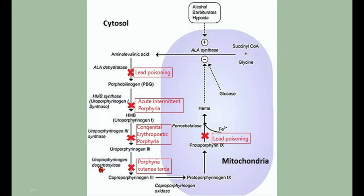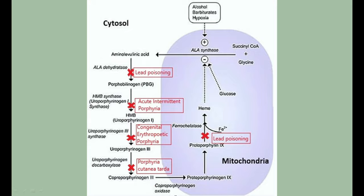The third type is porphyria cutanea tarda. Uroporphyrinogen 3 is converted by uroporphyrinogen decarboxylase into coproporphyrinogen 3. If this enzyme is impaired, the condition is porphyria cutanea tarda, and uroporphyrinogen 3 accumulates. Remember the name, the related enzyme, and the accumulated substrate. Heme synthesis continues with protoporphyrin formation; there are also disorders called protoporphyrias, but we won't go deep into those.